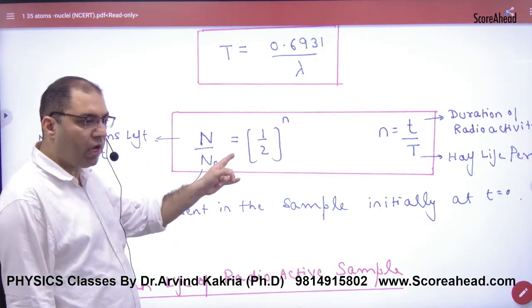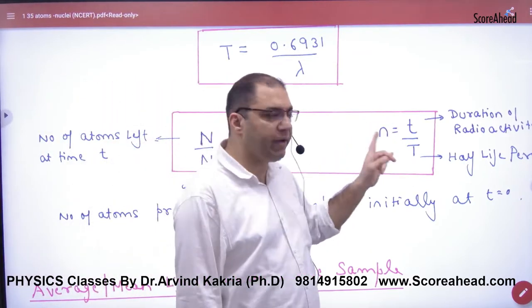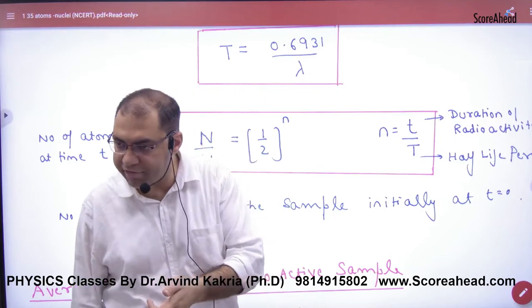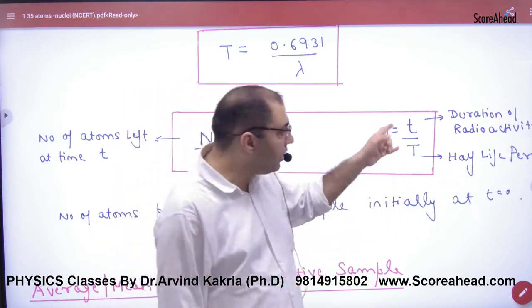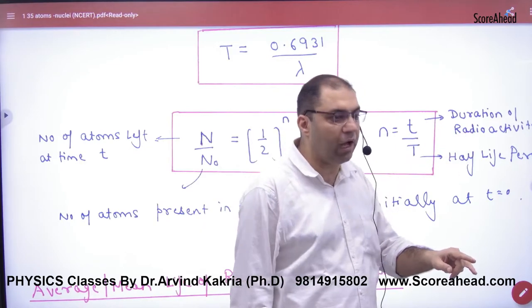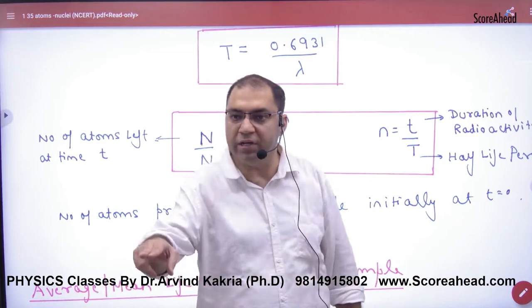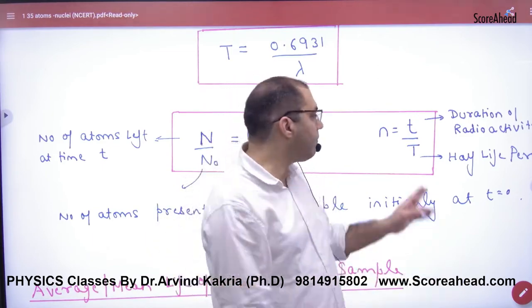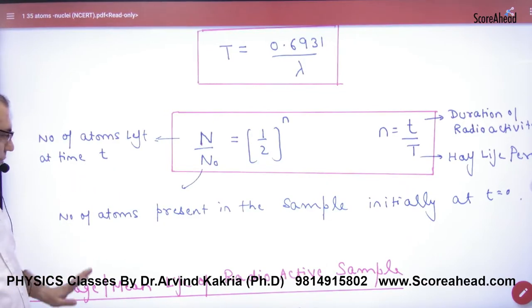Then half-life period: N is equal to N₀ half raised to power small n, where small n equals small t by capital T. Today we have made this formula. Capital T means half-life, small t means duration of radioactivity - how many years, how many days. We will divide it from T half-life period, so what will you have? N.